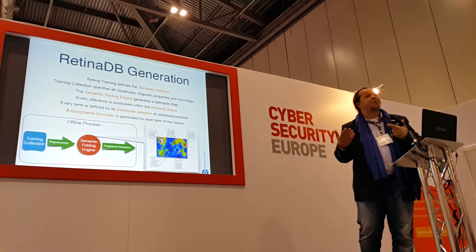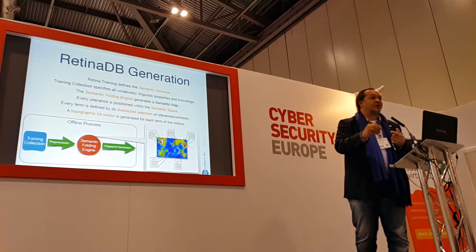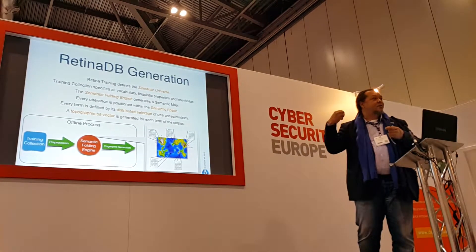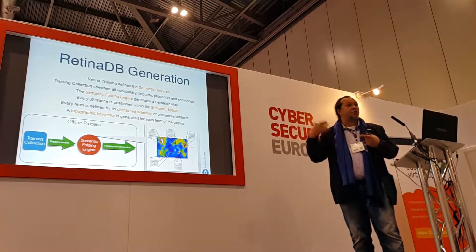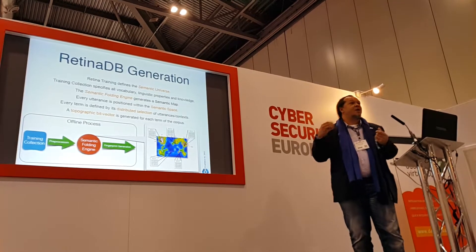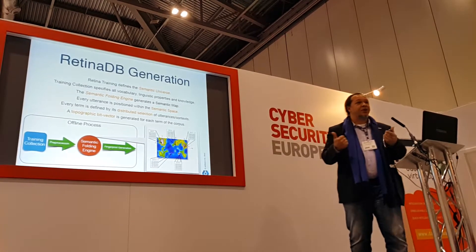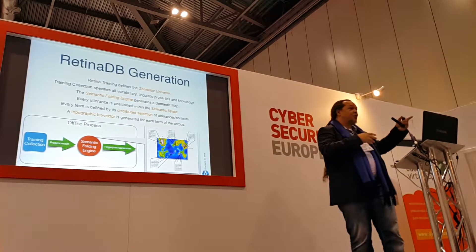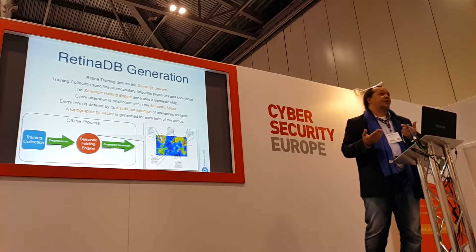A process that happens as we store utterances is that we keep asking: did I hear something similar to what I'm hearing now already? If so, I store this new utterance next to the similar ones from the past. Over many, many years, you end up with a map in your brain where the topics of utterances are organized in a topographic manner. Whenever you speak about ice cream, there is a specific area on the map associated with it; whenever you speak about your pets, it's another area. This is the semantic map we use to generate and understand language.